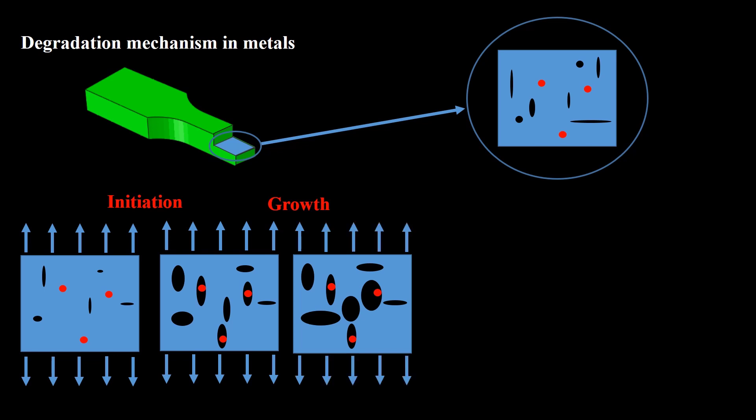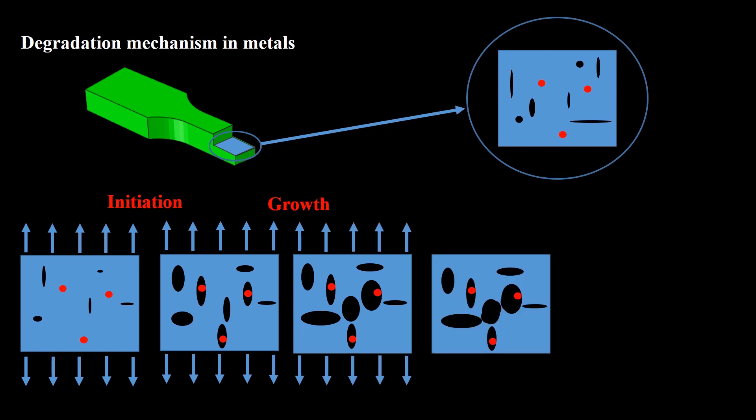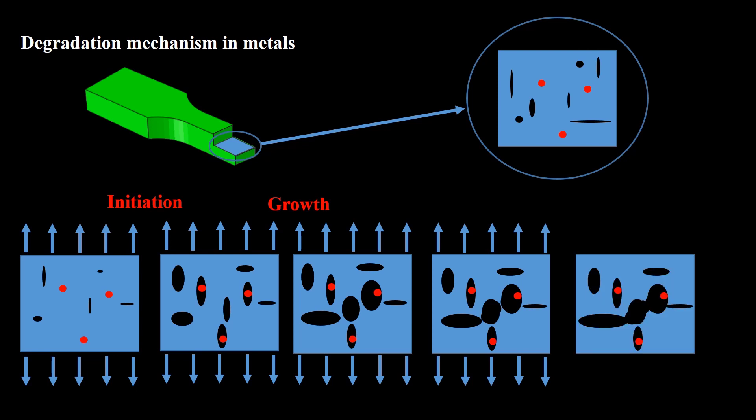After more deformation, necking happens in walls between two voids. In fact, by necking and then fracture of walls between two voids, they join each other and form a larger void. This phenomenon is known as voids coalescence. In this stage, material stiffness and strength decrease significantly, and applying more deformation causes sudden failure of the material.